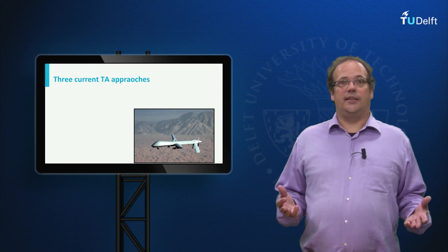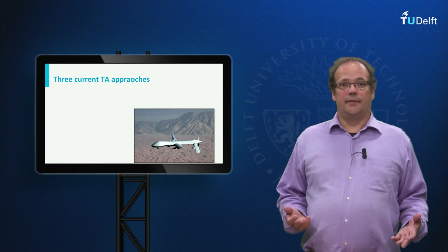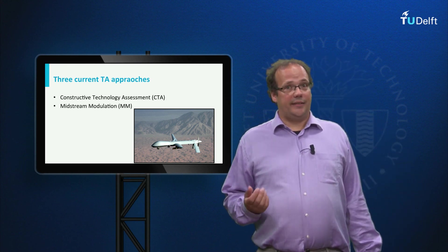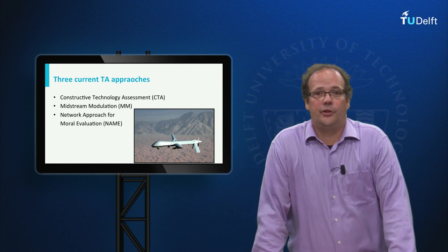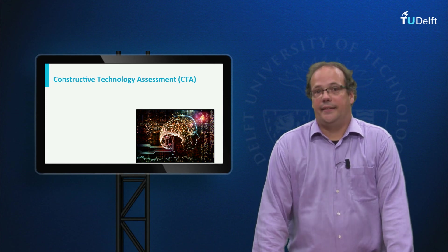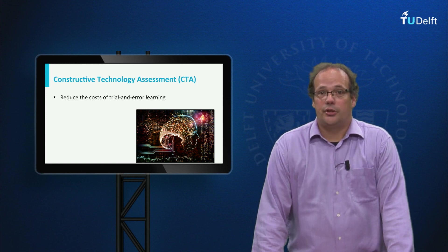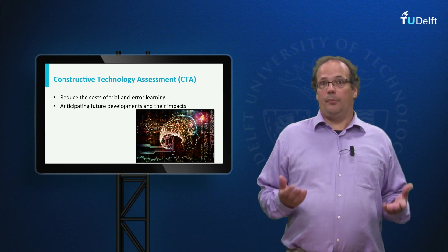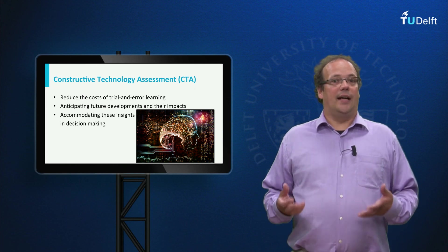Today there are a large number of technology assessment approaches, but in this web lecture I would like to focus on three of them: Constructive Technology Assessment or CTA, midstream modulation, and what is called a network approach for more evaluation. CTA was developed in the Netherlands in the 1980s by people like Ari Ripp and Joran Schott. The aim of CTA is to reduce the cost of trial and error learning by anticipating future developments and their impacts, and to feed back these insights into the design of technology.